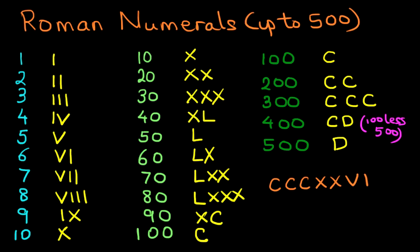How are we going to work it out? Well, firstly, we start on the left hand side and we look at the C's and we stop until we come to an X or an L or even a V or an I. Three C's together, that is 300.